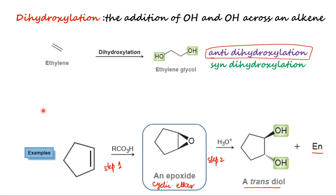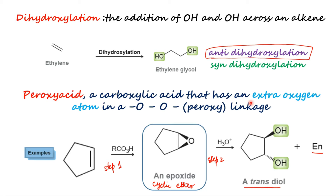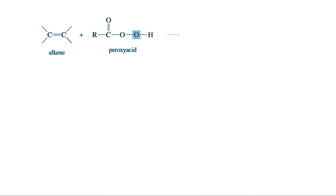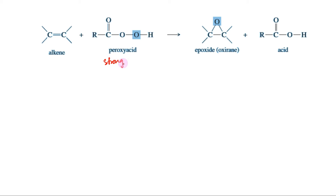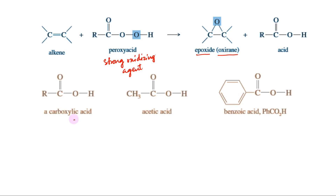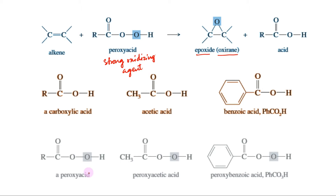Peroxyacids resemble carboxylic acids in structure, possessing just one additional oxygen atom. Peroxyacids are strong oxidizing agents and are capable of delivering an oxygen atom to an alkene in a single step. The product is an epoxide, also called oxirane. Some simple peroxyacids, sometimes called peroacids, and their corresponding carboxylic acids are shown here.